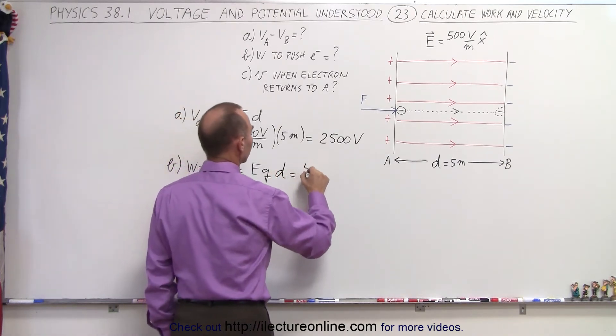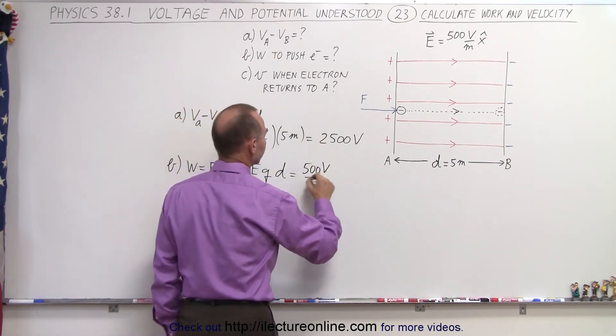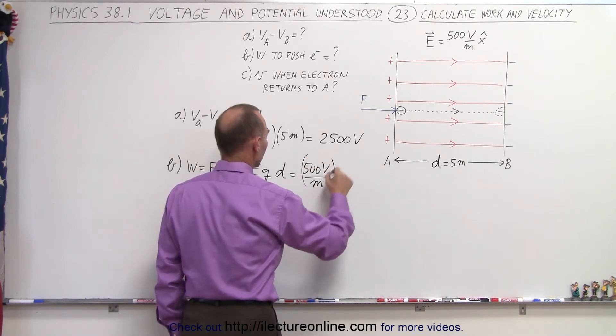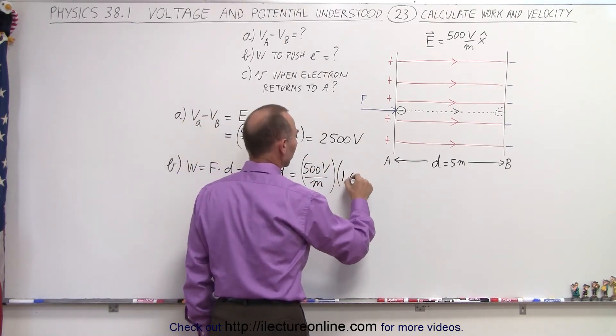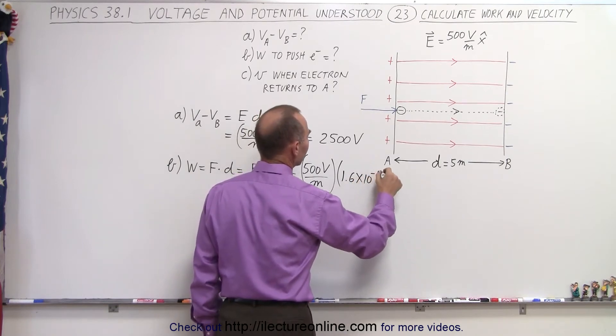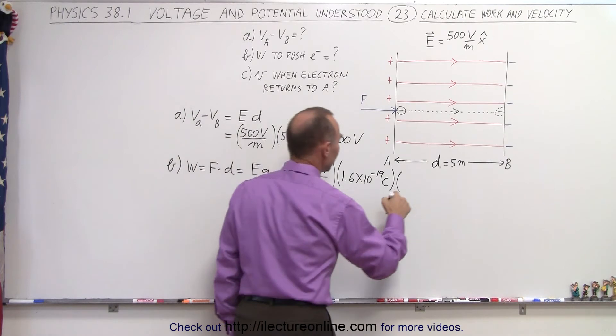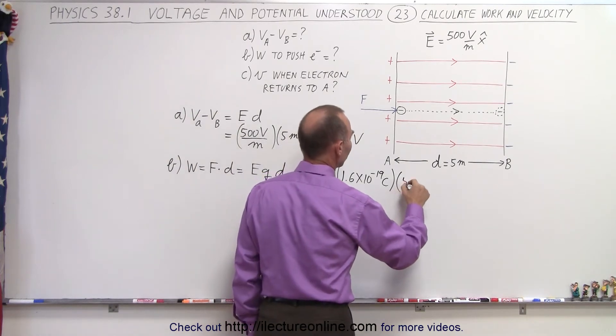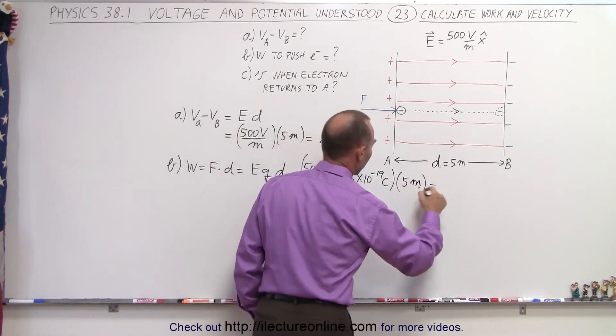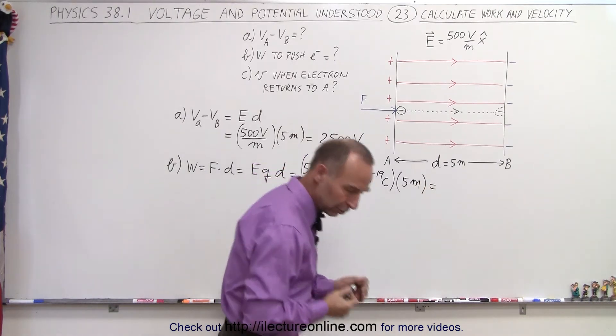So in this case that's 500 volts per meter, multiply times the charge of a single electron, which is 1.6 times 10 to the minus 19 coulombs, and then multiply times D, and that would be equal to 5 meters.